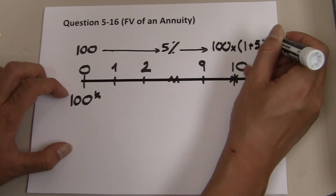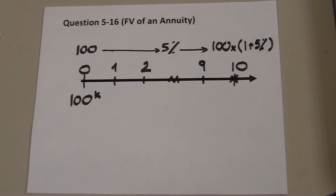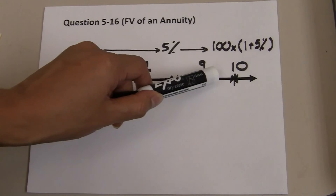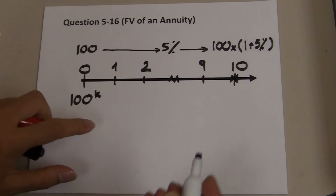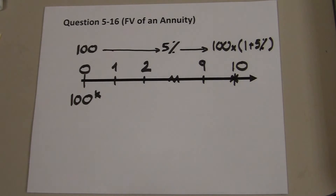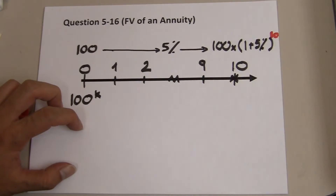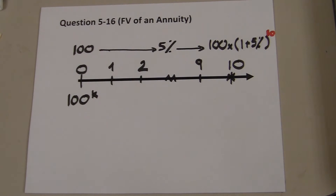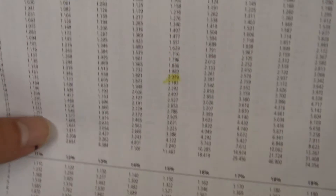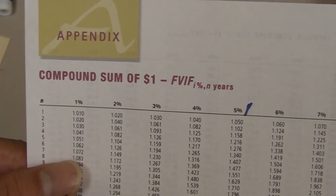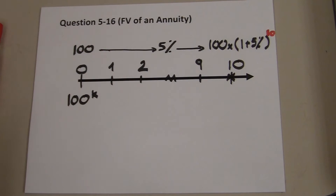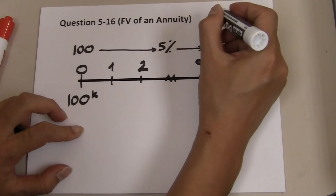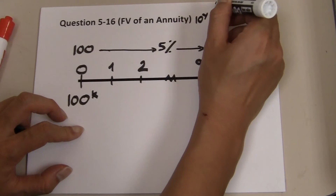How many periods? Ten years — one through ten — so you raise it to the power of ten. Another way is to look at a financial table for a single sum: the compound sum of one dollar. You look at 10 years and the 5% column.